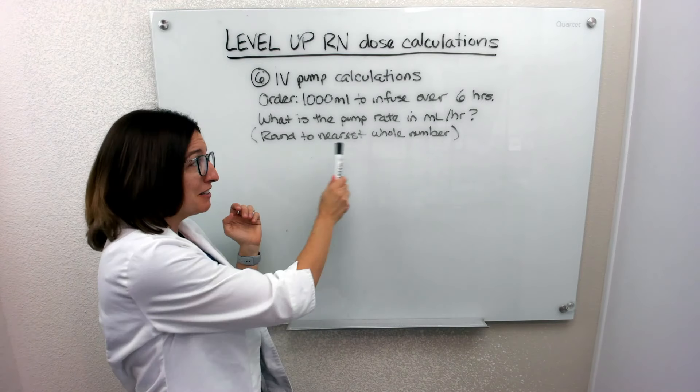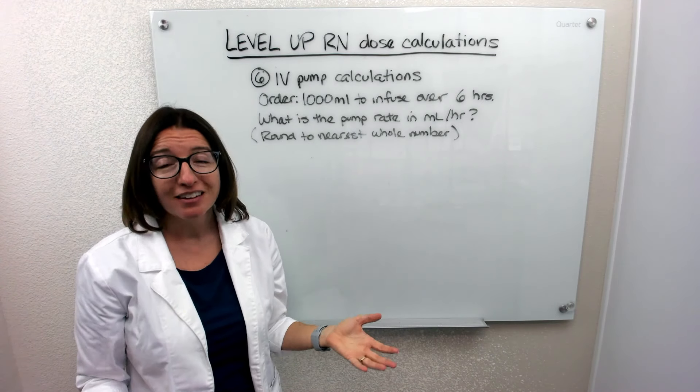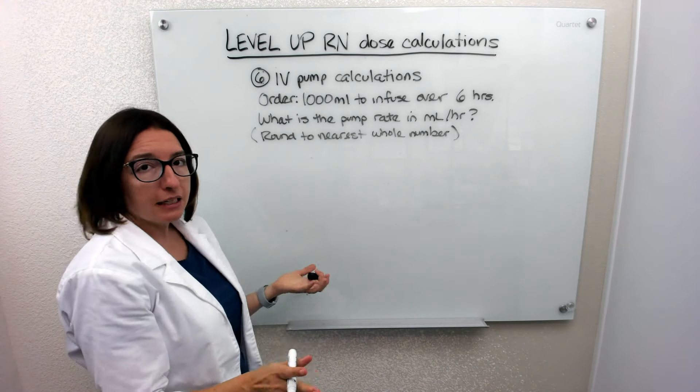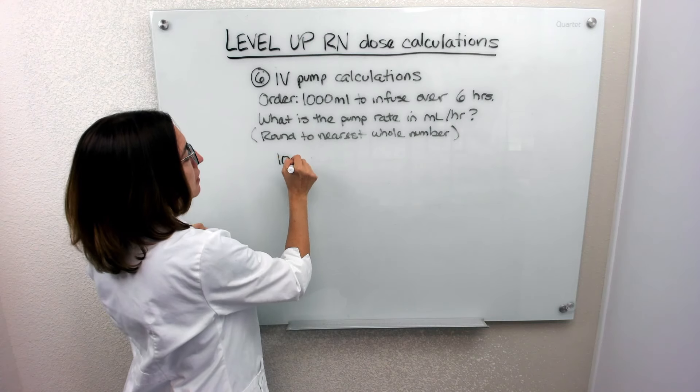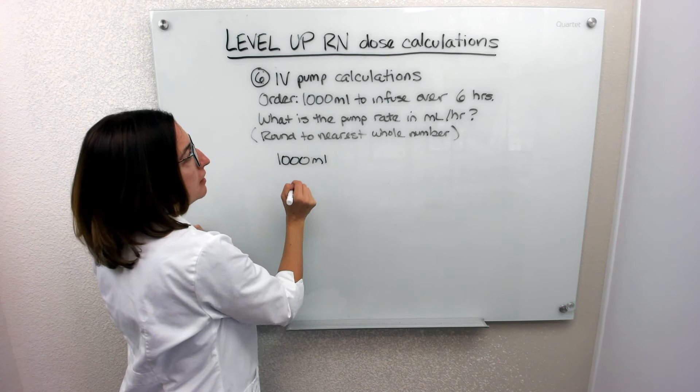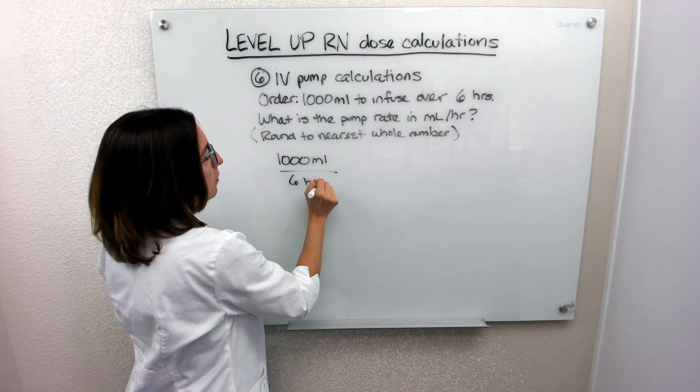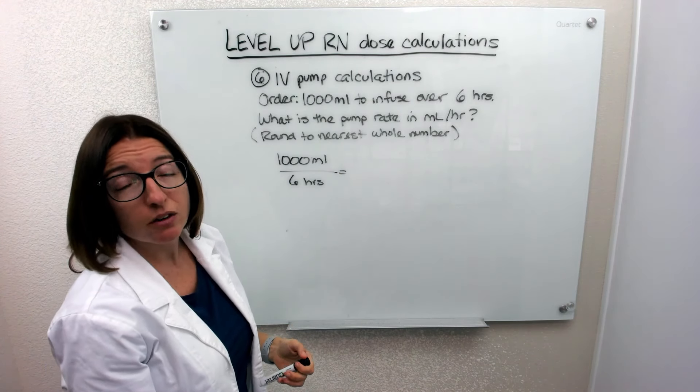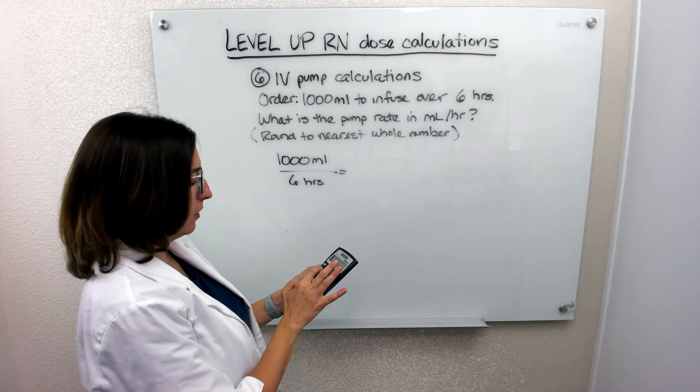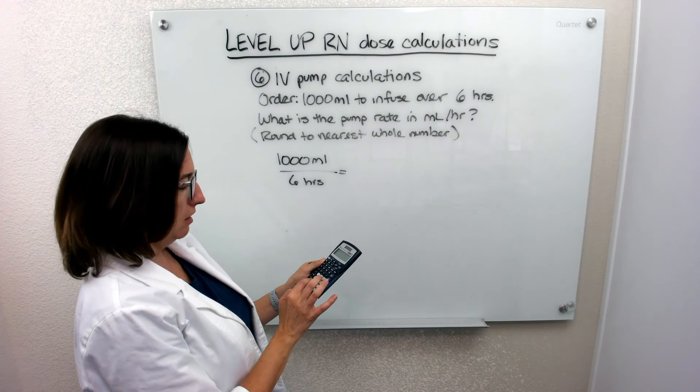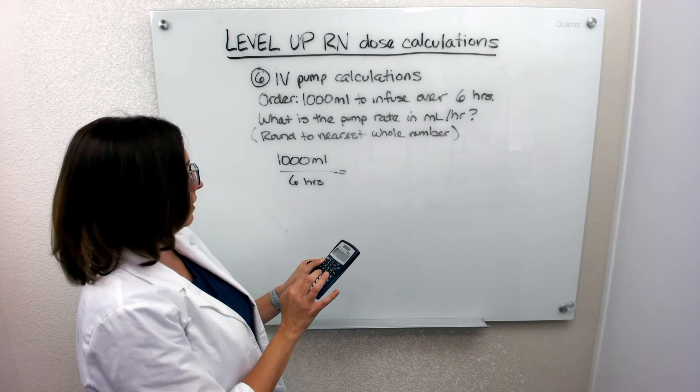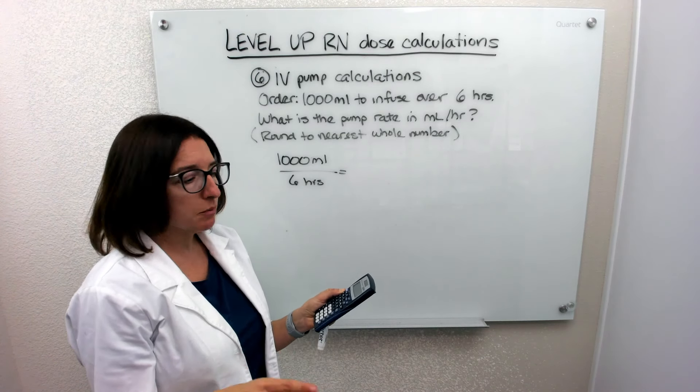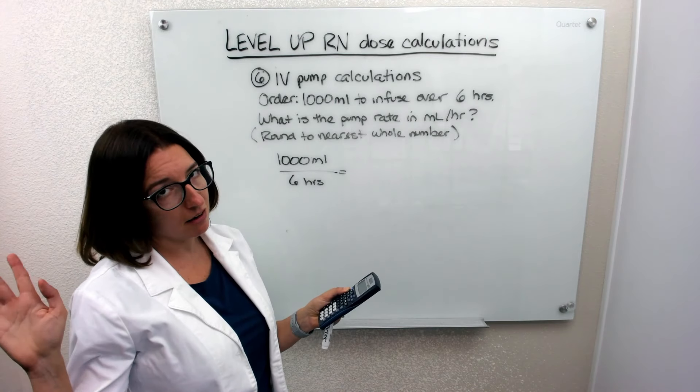Again, if you don't pay attention to that and you don't round, then that's going to be a problem and you're going to get it wrong. So this one's pretty easy. So a thousand milliliters is going to infuse over six hours. So if we just do this division, we'll get the rate in milliliters per hour. So turn on my calculator here. One thousand divided by six equals 166.6666 on and on. But again, we're rounding to the nearest whole number.